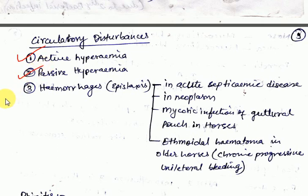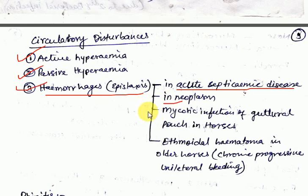Hemorrhages from the nose, i.e., epistaxis or nosebleed, may result from local trauma, erosions of submucosal vessels by inflammation, such as in acute septicemic diseases, or neoplasia. An important cause of epistaxis in horses is mycotic infection of the guttural pouches.